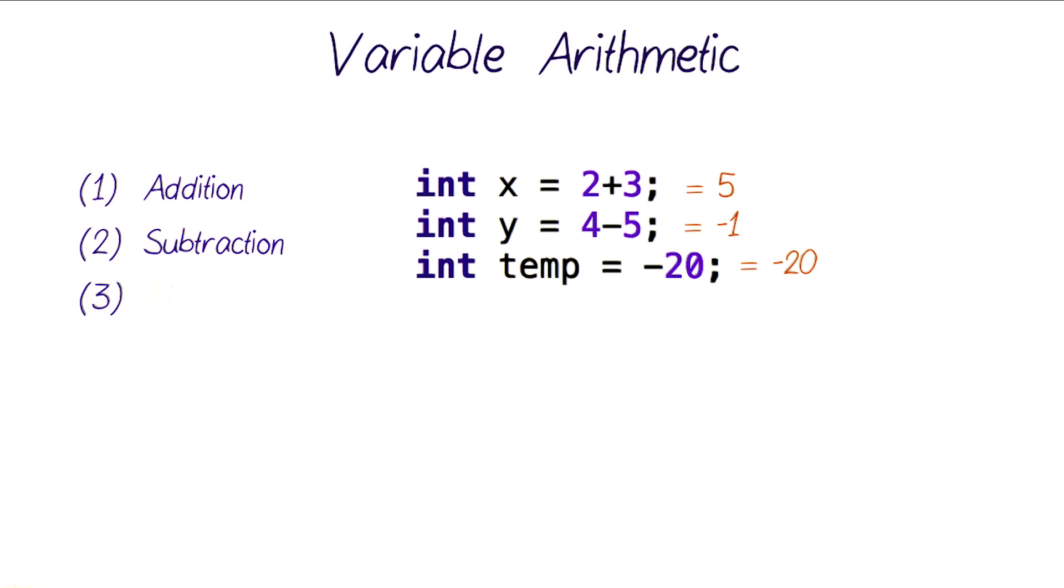For multiplication, you can use this asterisk sign. That's usually shift 8 on your keyboard. So this would multiply 7 by 4 and store the value 28 in the variable days.